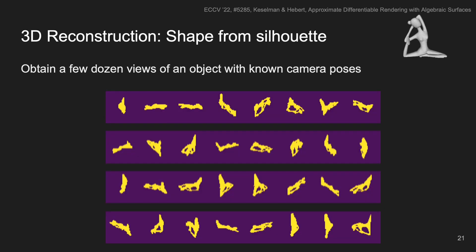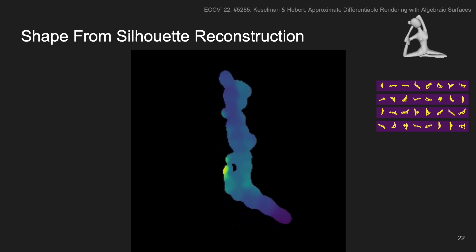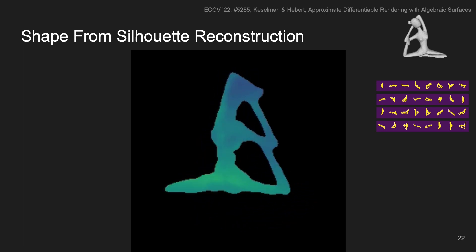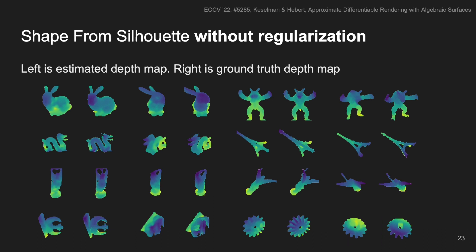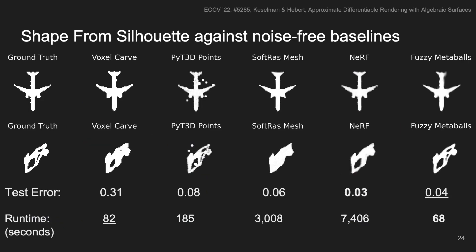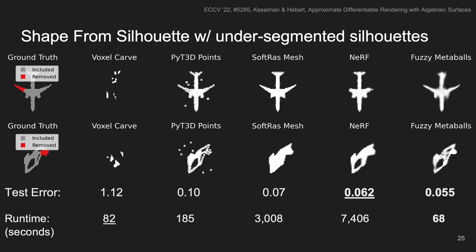We also perform experiments in Shape from Silhouette. We perform comparisons for several objects. On the left is our estimated depth map, and the right is the ground truth. In many cases these are similar, even though we use a very low degree of freedom implementation. Compared to other baselines such as voxel carving, other differential renderers, or even NeRF, our method has very good performance. Only NeRF outperforms us, despite it requiring 100 times more compute. We also perform experiments with perturbed silhouettes, where we are actually the best performer, and still the fastest.